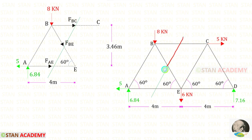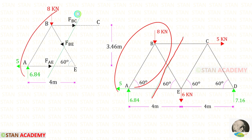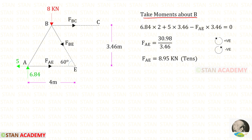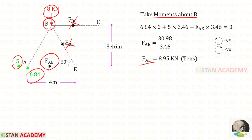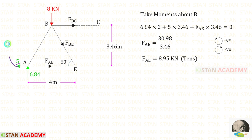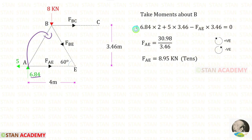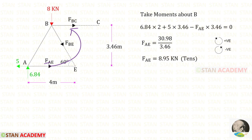I am going to make the third section and take the left side portion for analysis. We can take moments about B and find FAE. When we take moments about B, we should not consider FBC, FBE, and 8. The remaining forces are 5, 6.84, and FAE — there is only one unknown force, FAE, which is why I have taken moments about B. Five acts clockwise, positive, with distance 3.46. 6.84 acts with distance 2 (i.e., 4/2). FAE acts anticlockwise, negative, with distance 3.46. For FAE we get a positive value, meaning it is tensile.